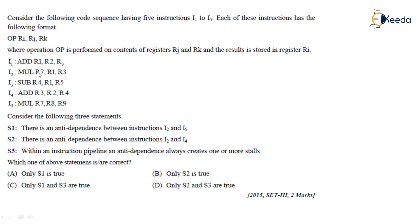There are 5 instructions given: I1, I2, I3, I4, I5. There are a few assertions made: S1, S2, S3. We need to find out which of these statements are true and which are false.